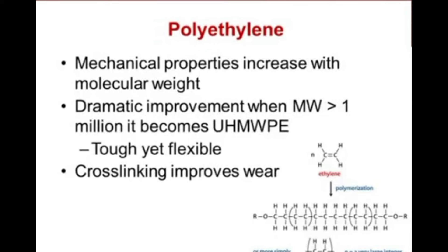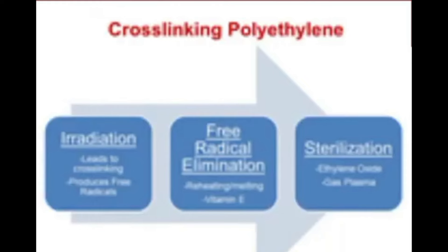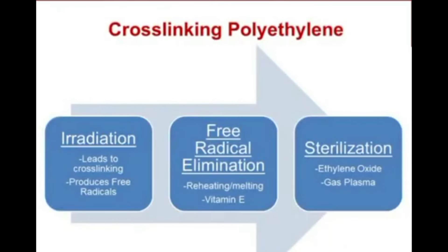Regarding polyethylene, it's important to understand several properties. A key concept is that cross-linking improves wear. The manufacturing process begins with irradiation, which generates free radicals and cross-linking. These free radicals need to be eliminated to prevent further oxidization. This can be done with reheating or melting. Free radical scavengers such as vitamin E have also been used. Finally, the polyethylene must be sterilized before use in humans.